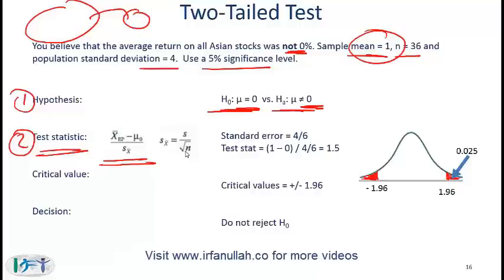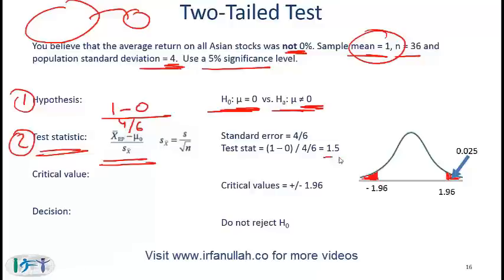In our example, the test statistic is x-bar minus mu-naught over the standard error: 1 minus 0, divided by 4 over root 36, which is 4 over 6. So 1 divided by 4/6 gives us 1.5. Knowing this formula for the test statistic is essential.